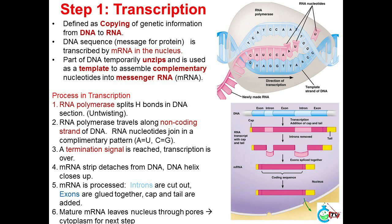Process of transcription: RNA polymerase splits H-bonds in the DNA section. RNA polymerase travels along the strand of DNA; RNA nucleotides join in a complementary pattern (A equals U, C equals G). A termination signal is reached and transcription is over. The mRNA strip detaches from DNA; the DNA helix closes up. mRNA is processed: introns are cut out, exons are glued together, and a cap and tail are added. Mature mRNA leaves the nucleus through pores into the cytoplasm for the next step.